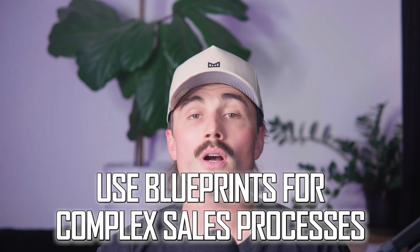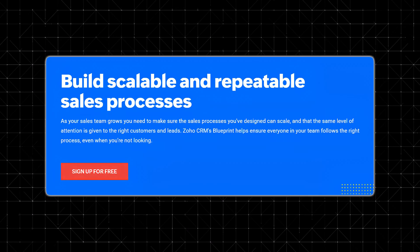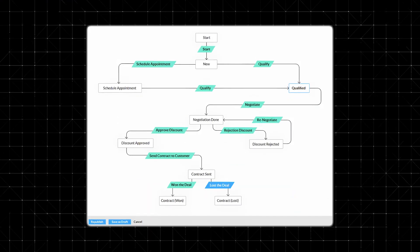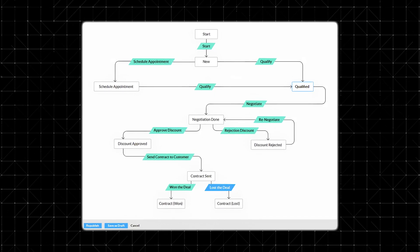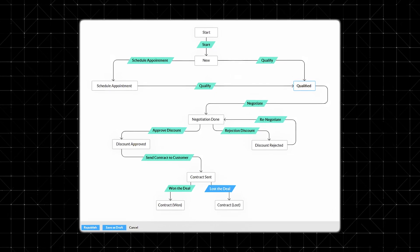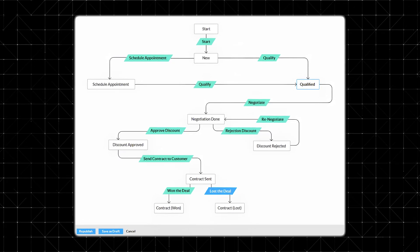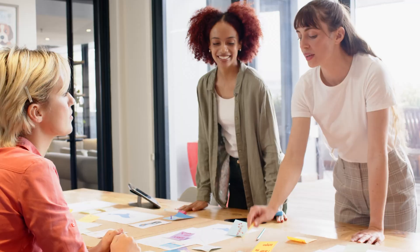Step six: use blueprints for complex sales processes. Zoho has a tool called blueprints — basically a way to force a specific process to happen step-by-step, locking in the order of actions. For example, after a call is marked complete, the next action becomes 'send proposal.' Once the proposal is marked sent, only then can the deal move to negotiation. Each step can have required fields, approvals, or tasks. Blueprints are great for bigger teams where consistency matters, or if you want to make sure no steps are skipped.